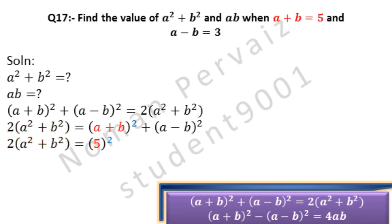From the question, a + b = 5, so we write 5 in place of (a + b), then square. Again from the question, a − b = 3, so we write 3 in place of (a − b), then square. So we have: 2(a² + b²) = 5² + 3².